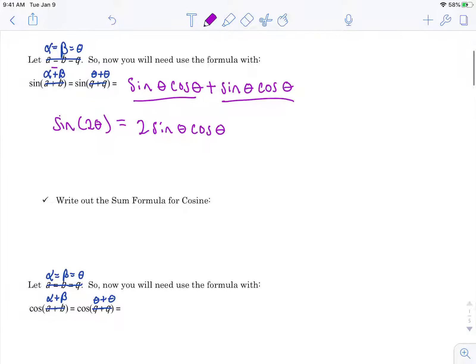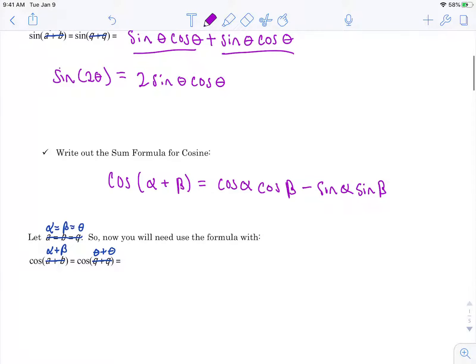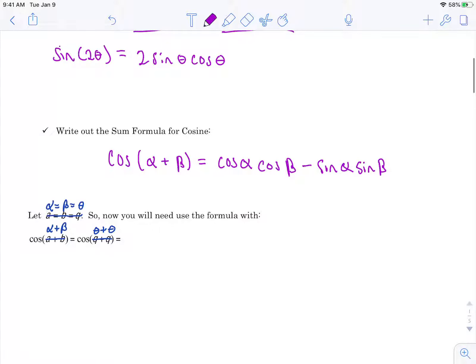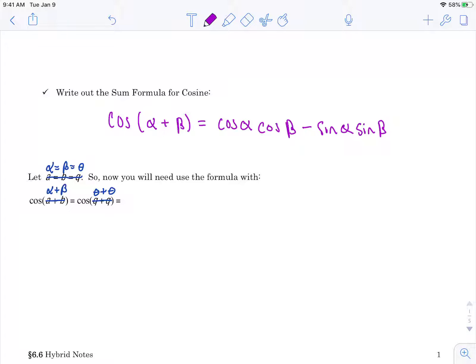All right, now the sum formula for cosine is cosine of alpha plus beta equals cosine alpha cosine beta minus, that's the biggest mistake we make, sine of alpha sine of beta. All right, once again I'm just going to claim that my alpha and my betas are the same, so I'm just going to name them the same thing which is going to be theta and theta.